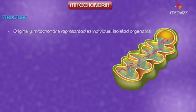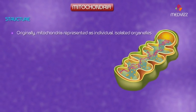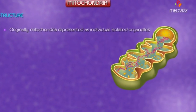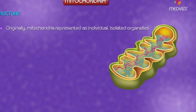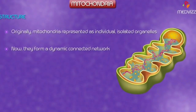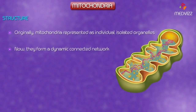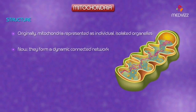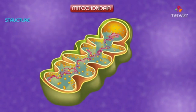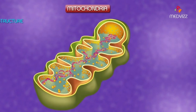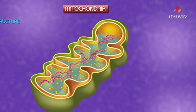All mitochondria were originally represented as individual isolated organelles. It is now recognized that mitochondria form a dynamic connected network, also called a reticulum.